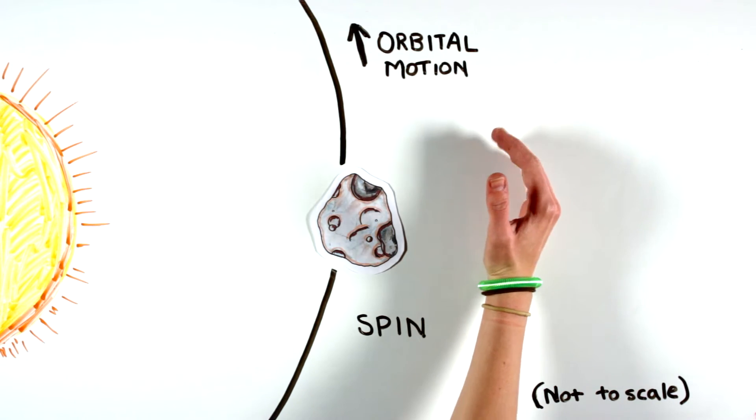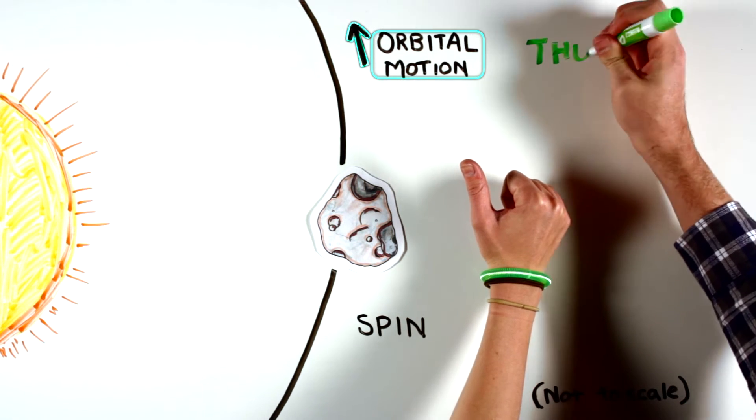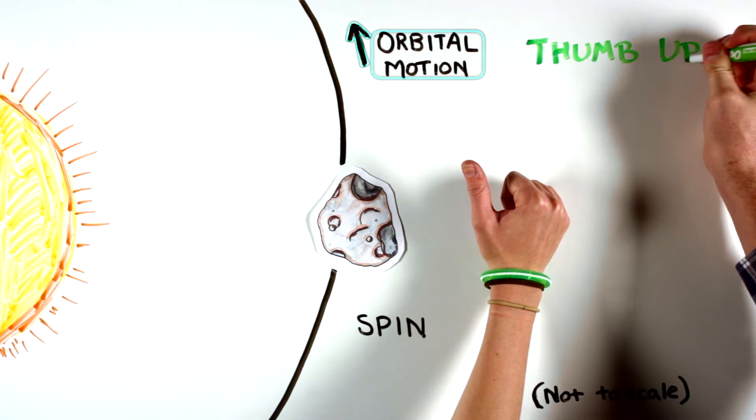First, curve your fingers in the direction of orbital motion and observe which direction your thumb points. In this case, up.